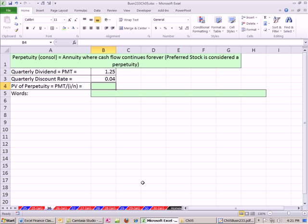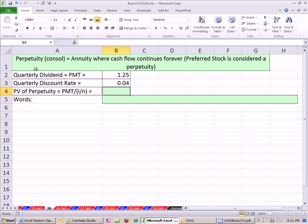Pretty straightforward. We just come here. So here's our quarterly dividend payment. Here's our quarterly discount rate. We simply take that future cash flow divided by this period rate. And so that is one method of valuing preferred stock. The value of stock with these parameters would be $31.25.